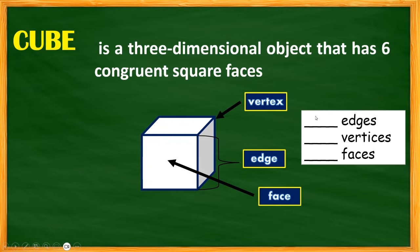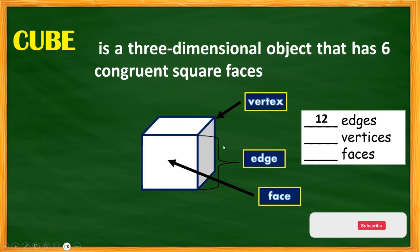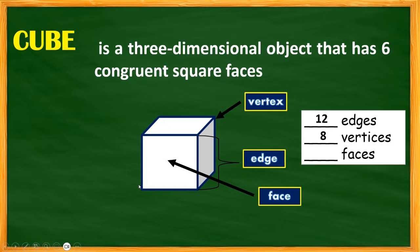Let's identify the number of edges of the cube. Counting them: 1, 2, 3, 4, 5, 6, 7, 8, 9, 10, 11, and 12 — so the cube has 12 edges. For vertices: 4 on top and 4 on the bottom gives us 8 vertices. And we already know the cube has 6 faces. So in summary: 12 edges, 8 vertices, and 6 faces.